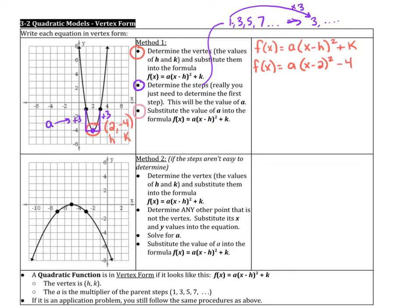So then the third thing you do is substitute that a value into the formula. So the a is 3, the h is 2, and the k is negative 4. And that is it.